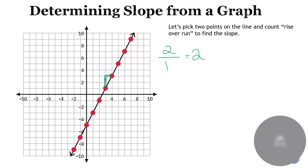Changing color. What if I picked the same first point but a different second point further up? Now counting rise over run: my rise is six — and note you are counting spaces, not lines — and my run is three. Six divided by three is two. The slope is still two.